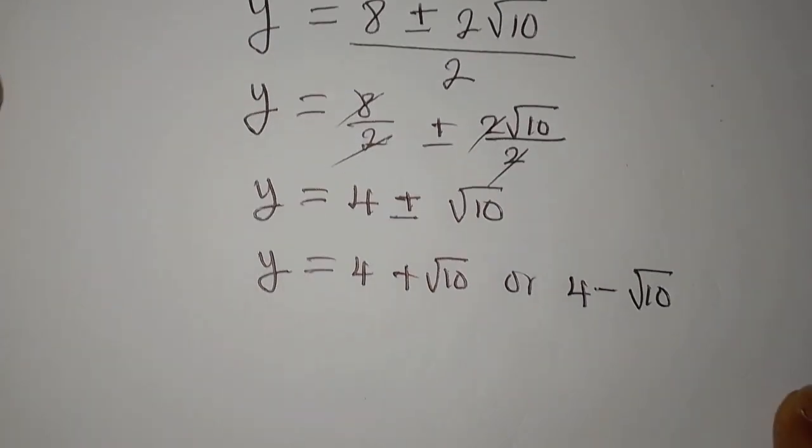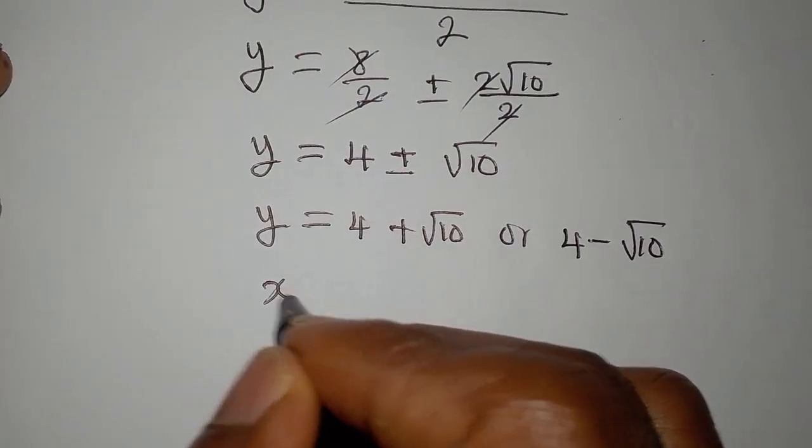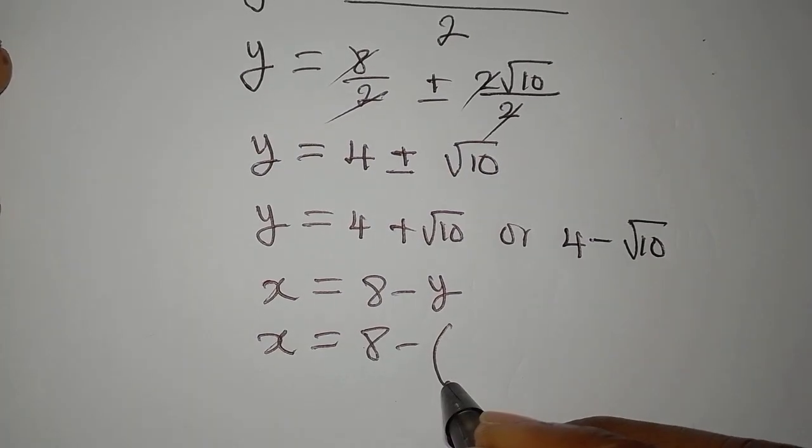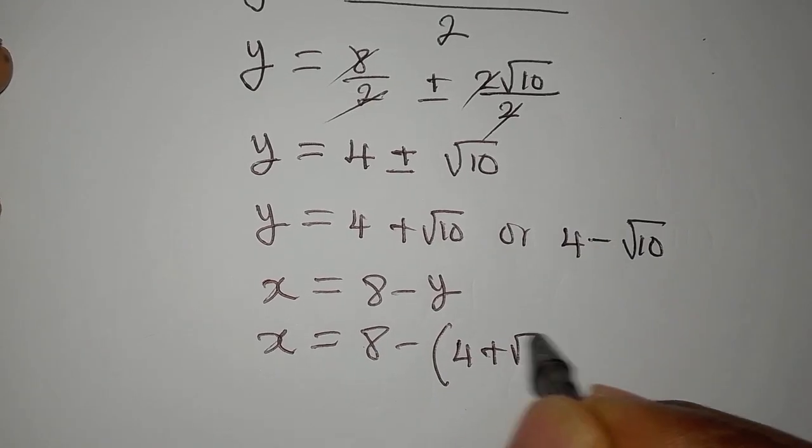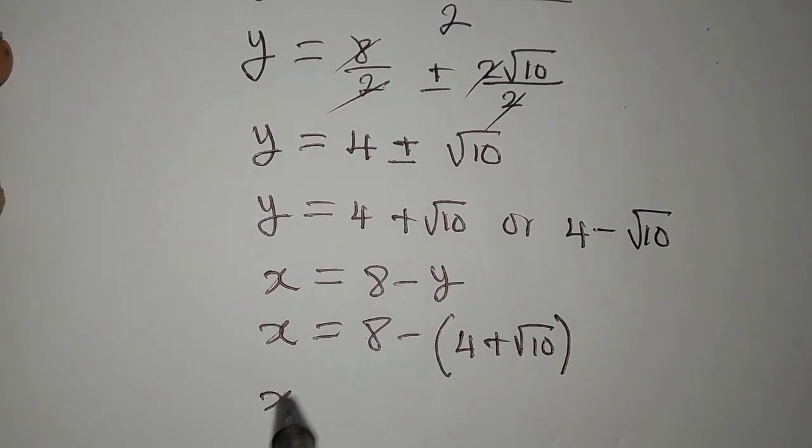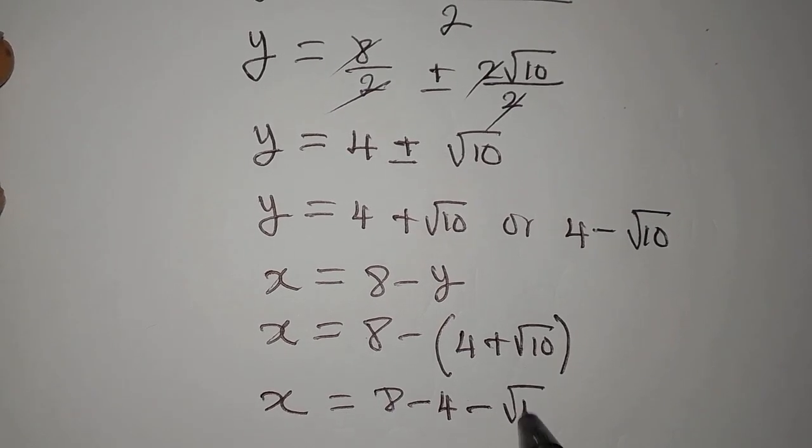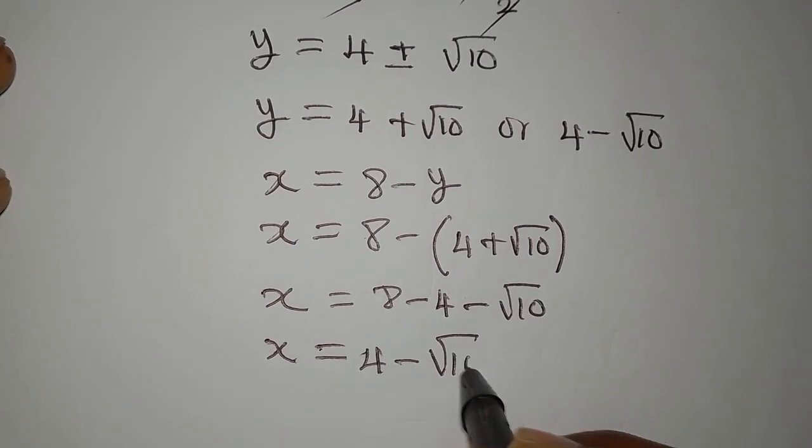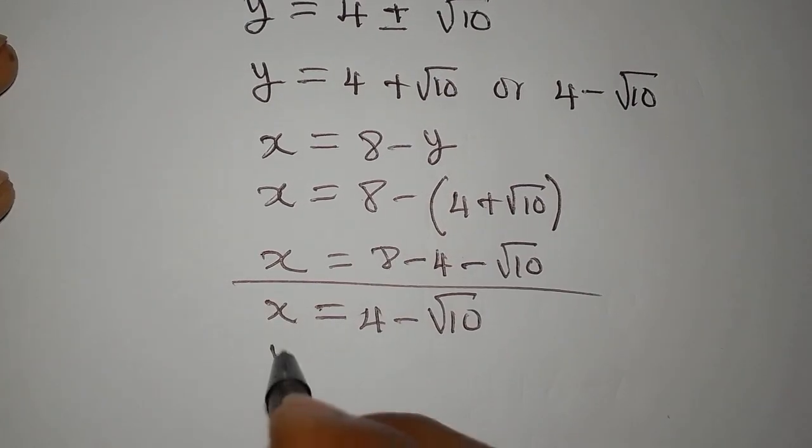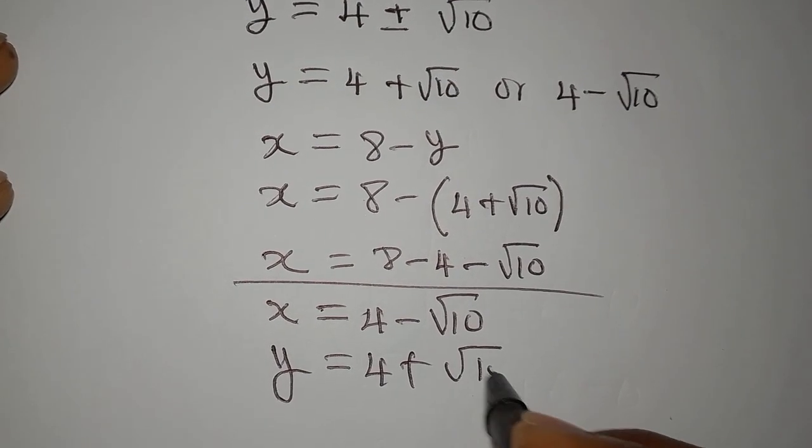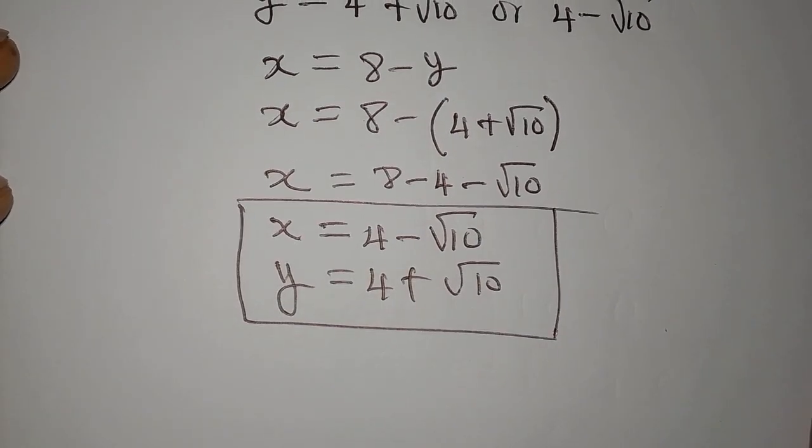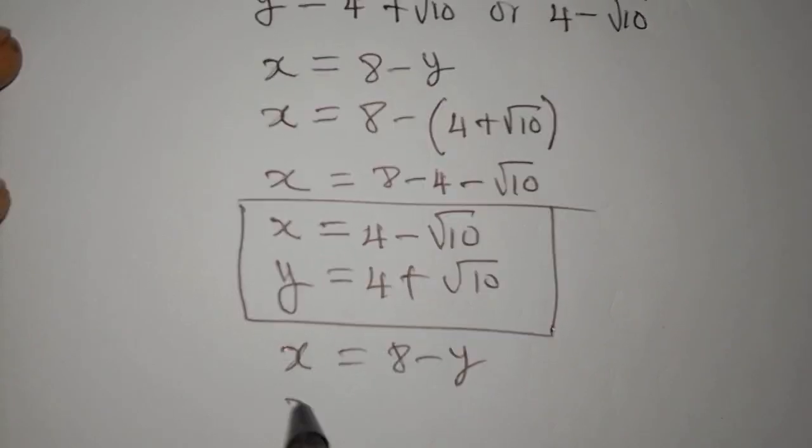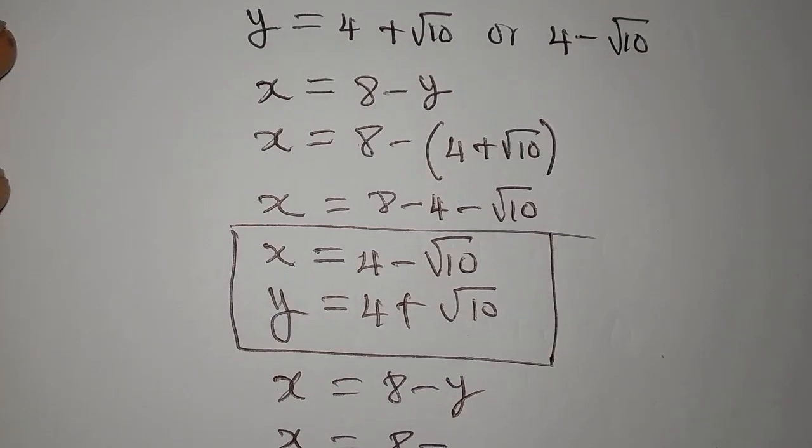And then, remember that we left out equation 3 before, which is x equals 8 minus y. Now, our x is going to be 8 minus, open bracket for the y, the first value, 4 plus root 10. If you open the bracket, you shall have x to be 8 minus 4 minus root 10. Okay, and then at the end of the day, our x is going to be 4 minus root 10. Remember, when x is this, y is 4 plus root 10. Okay, now, let's get the other value of y and put into this same equation. x equals 8 minus y. So, x now will be 8 minus, the second value of y is, see it over there,